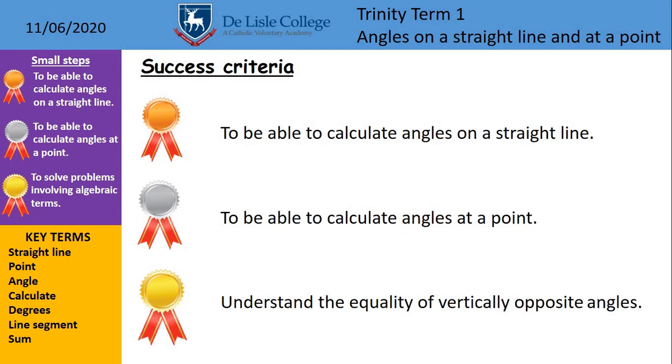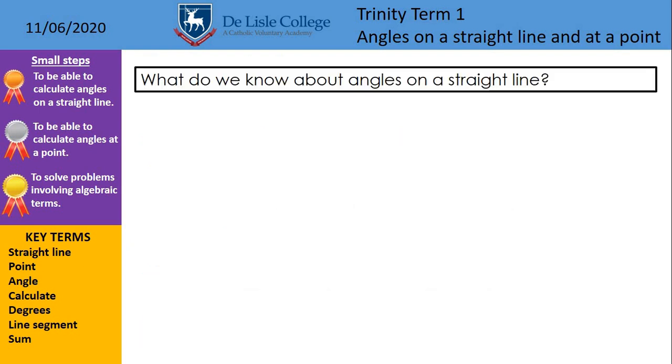So today we're going to be able to calculate angles on a straight line, be able to calculate angles at a point, and then finally understand the equality of vertically opposite angles. We'll take these one at a time here and get our way through. Quite a lot of these we have touched on in previous lessons, so should be a little bit more familiar.